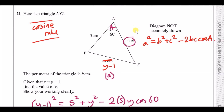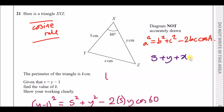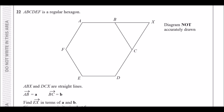Finally, to find the perimeter, add up all the lengths: five plus y plus x, which is five plus eight plus seven, giving a total perimeter of 20 centimeters. Alright, number 22 — ABCDEF is a regular hexagon, meaning all interior angles are the same.